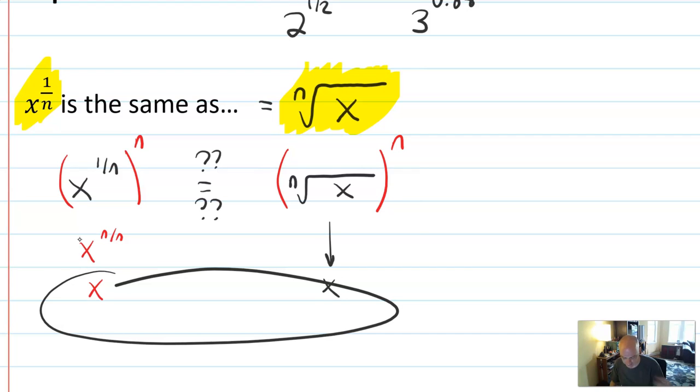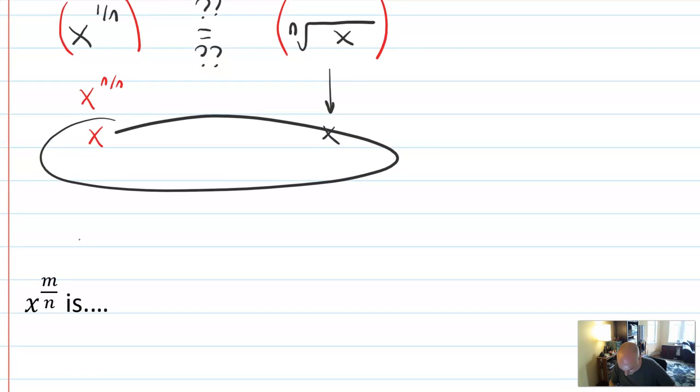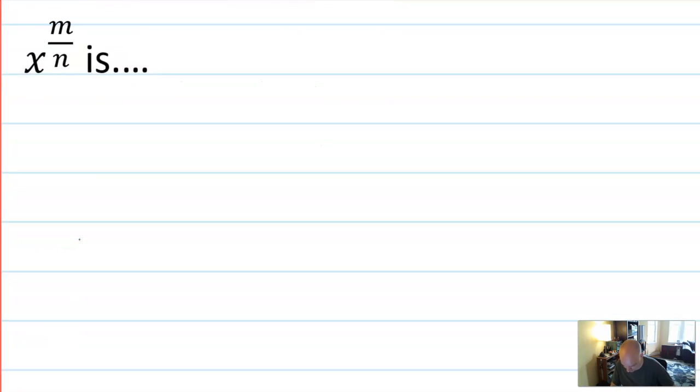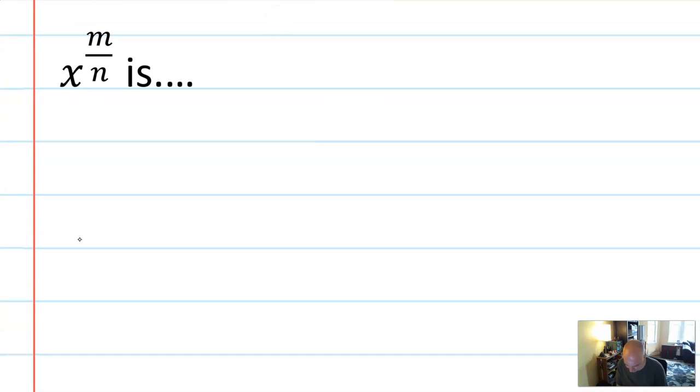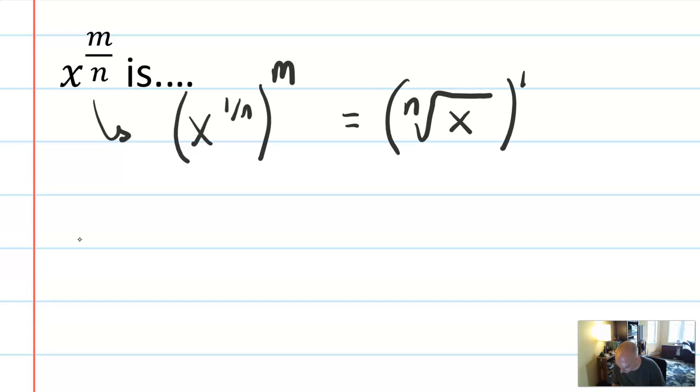And so when you have a fractional exponent, that is the same as a root. Furthermore, let's go quickly and more abstractly, if I have a number on the top of that fraction, that can be thought of as x to the 1 over n to the m. Or we might write it as the nth root of x to the m.